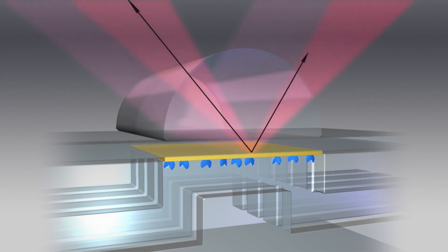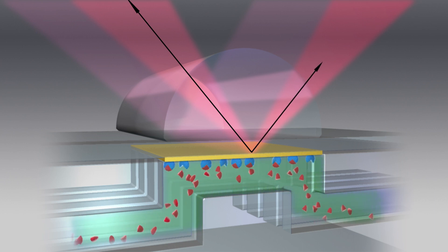Biacore uses the phenomenon of surface plasmon resonance to detect biomolecular interactions as they happen. SPR causes a reduction in the intensity of light reflected at a specific angle from the glass side of the sensor surface. As molecules bind to the sensor surface, the refractive index close to the surface changes, altering the angle of minimum reflected intensity. The change in SPR angle is proportional to the mass of material bound.